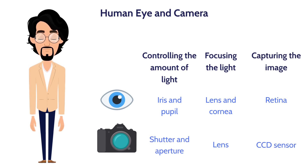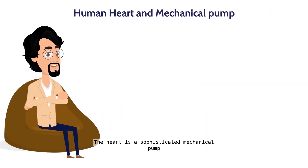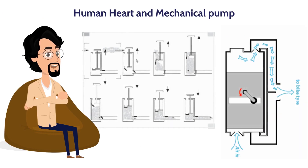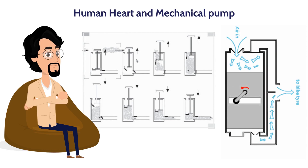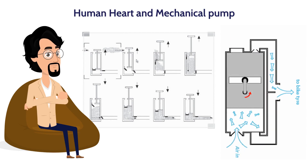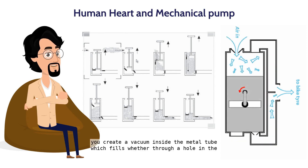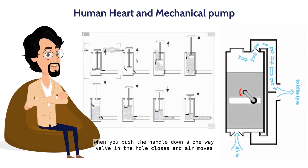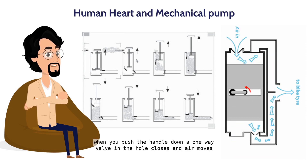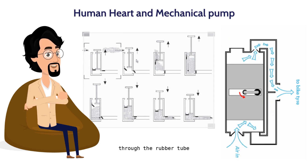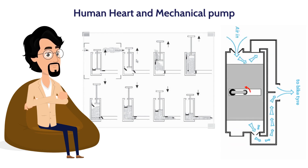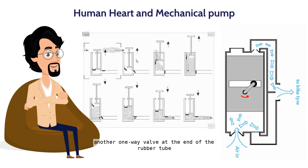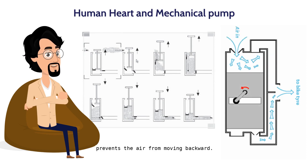The heart is a sophisticated mechanical pump made of strong muscle. Consider a simple bicycle pump — when you pull the handle up, you create a vacuum inside the metal tube, which fills with air through a hole in the side. When you push the handle down, a one-way valve in the hole closes and air moves through the rubber tube into the tire. Another one-way valve at the end of the rubber tube prevents the air from moving backward.